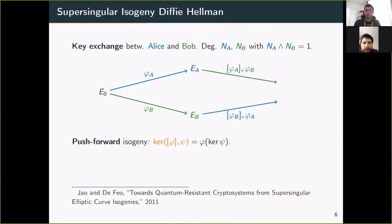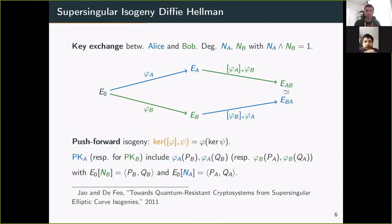Their goal is to compute the push forward isogenies, which should result in the same curve EAB = EBA. If the kernel of φA was generated by A and the kernel of φB is generated by B, you want the shared curve corresponding to the subgroup generated by A and B. But if you only publish EA and EB, there's no real way of arriving at the same shared curve.